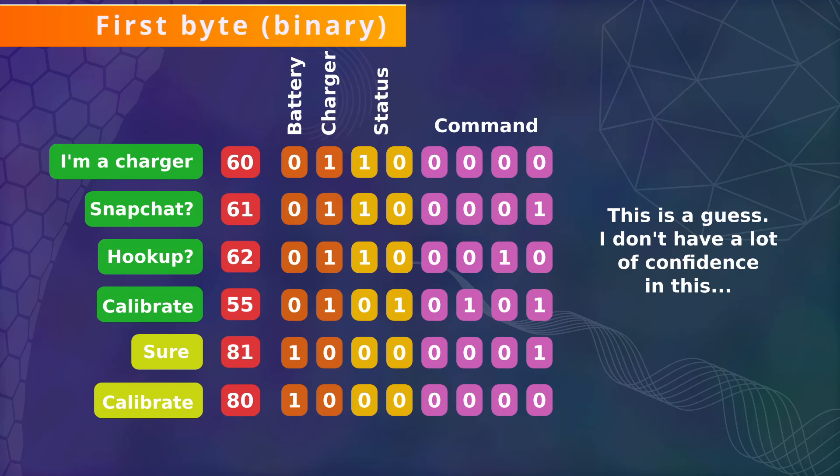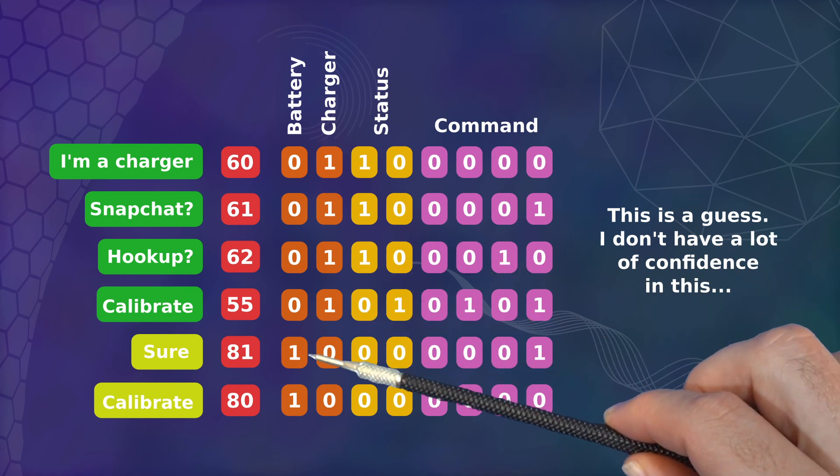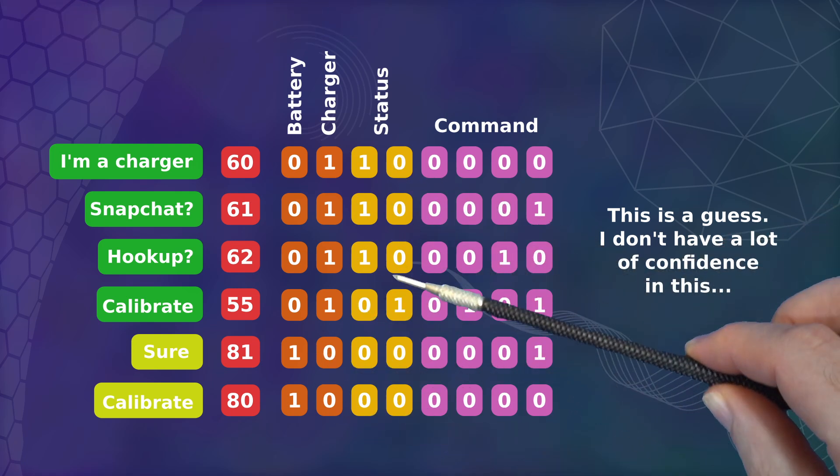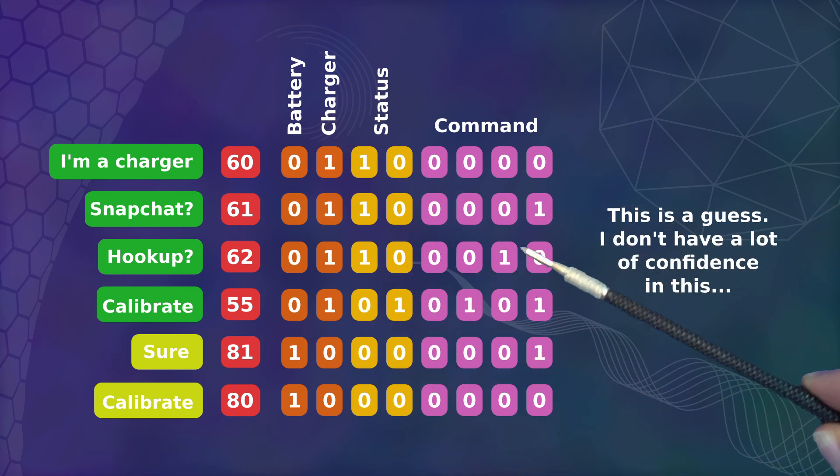When we look at these numbers in binary, we get the feeling that this first byte could be partitioned with the first two bits describing the device type, the second two bits maybe a status, and the remaining bits could be a command.